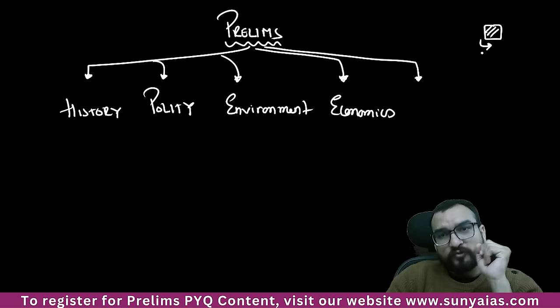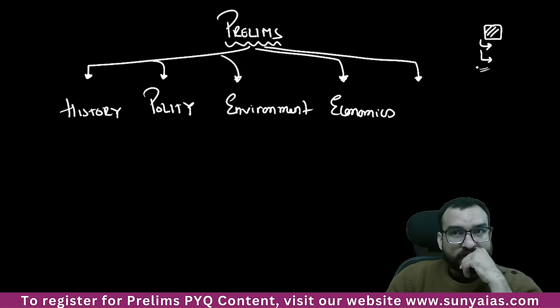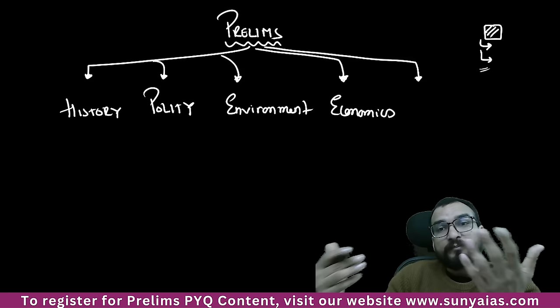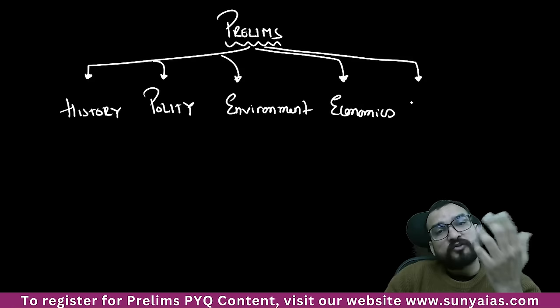I always ask why certain students who have cleared prelims once, or cleared the whole examination and are in the merit list, are also appearing in services — and again, when they give a UPSC attempt without preparation, they are able to clear prelims year by year. But most students are not able to clear prelims even once after four or five attempts. Why is this happening? That means something they are doing differently. With their limited knowledge, they are appearing again and again and qualifying prelims.